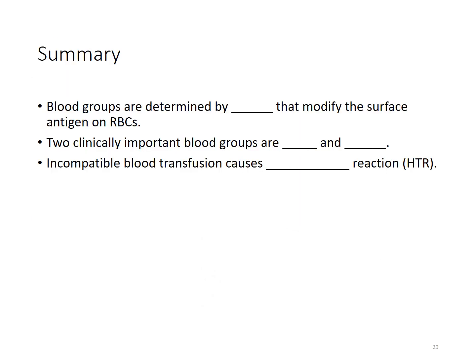To summarize: Number 1, blood groups are determined by surface sugars that modify the surface antigens on red blood cells. Number 2, the two clinically important blood groups are the ABO blood group and the rhesus group. Number 3, incompatible blood transfusion causes hemolytic transfusion reaction.